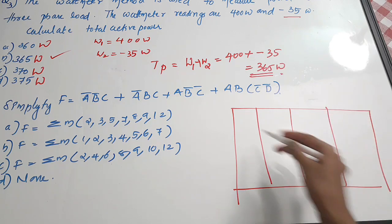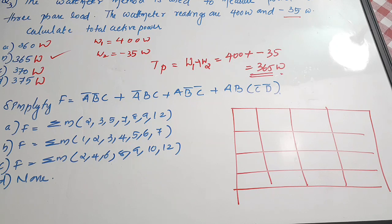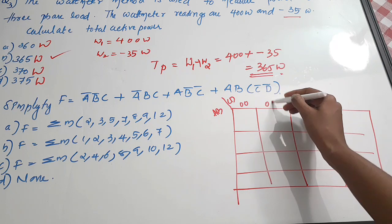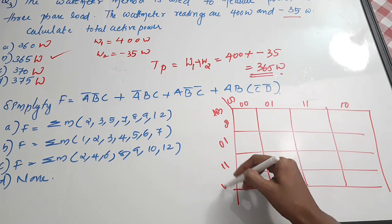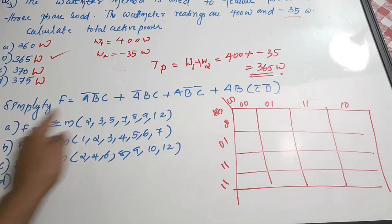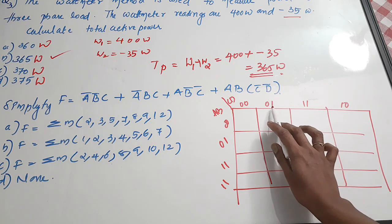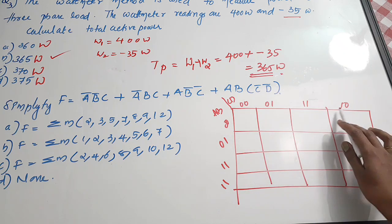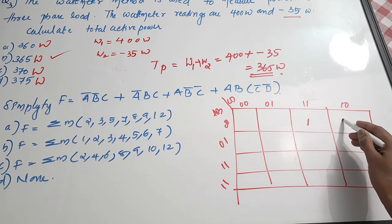Drawing the four-variable K-map with rows AB and columns CD in Gray code order: 00, 01, 11, 10. Placing 1s for each minterm: Ā B̄ C places 1s where C=1, A=0, B=0. Ā B D places 1s where A=0, B=1, D=1. A B̄ C̄ places 1s where A=1, B=0, C=0. A B C̄ D̄ places 1 where A=1, B=1, C=0, D=0. Note: the second term has a correction — it is Ā B D, not Ā B C.